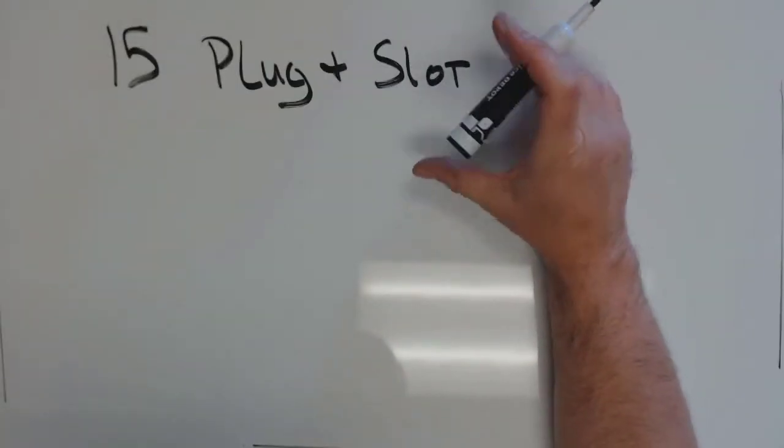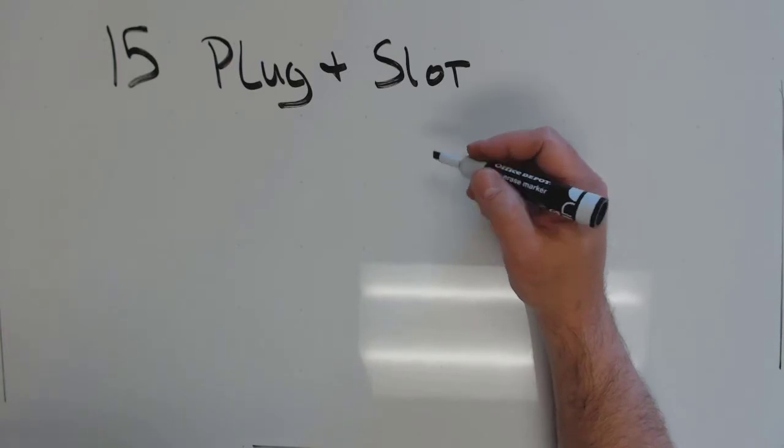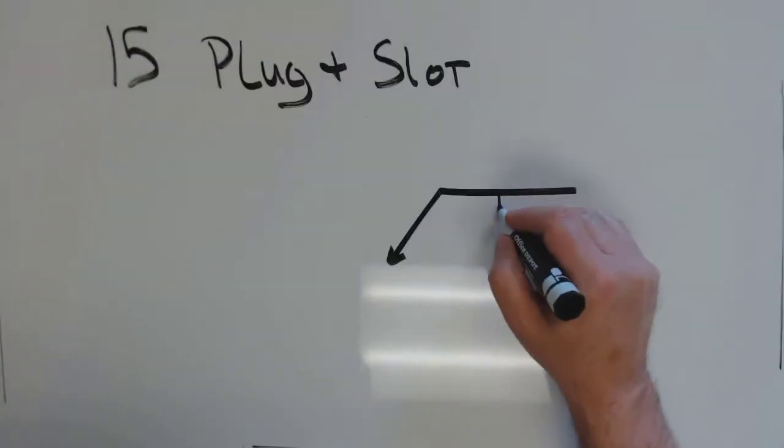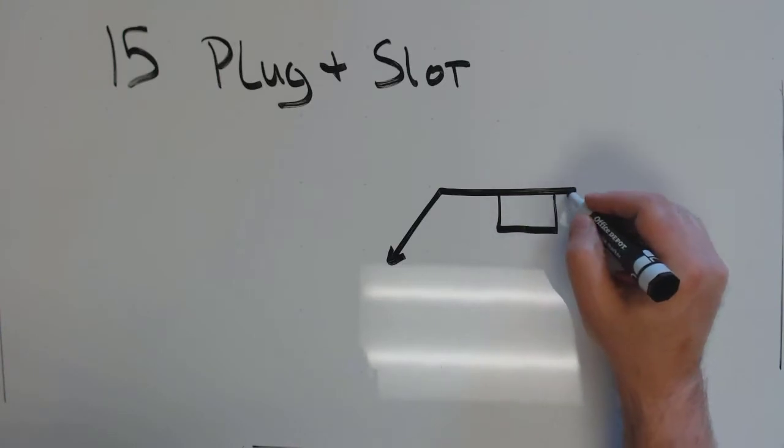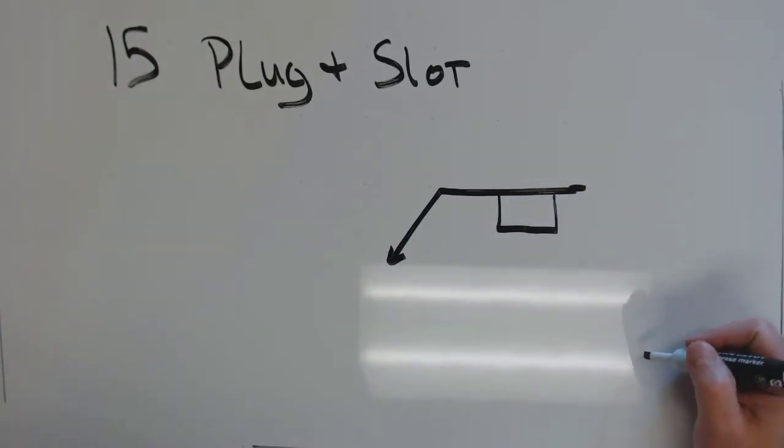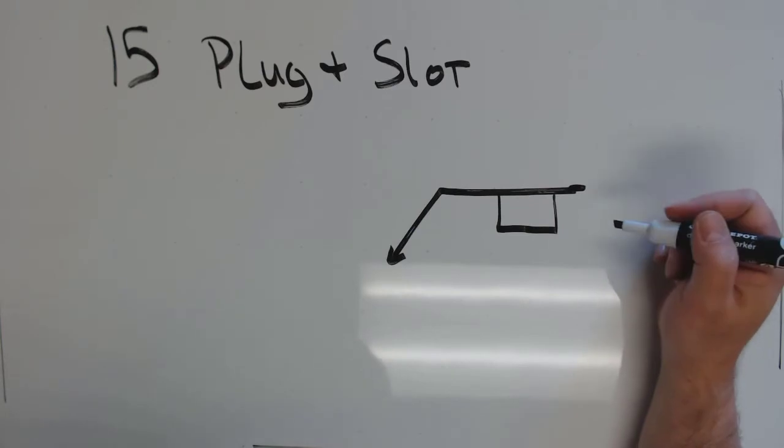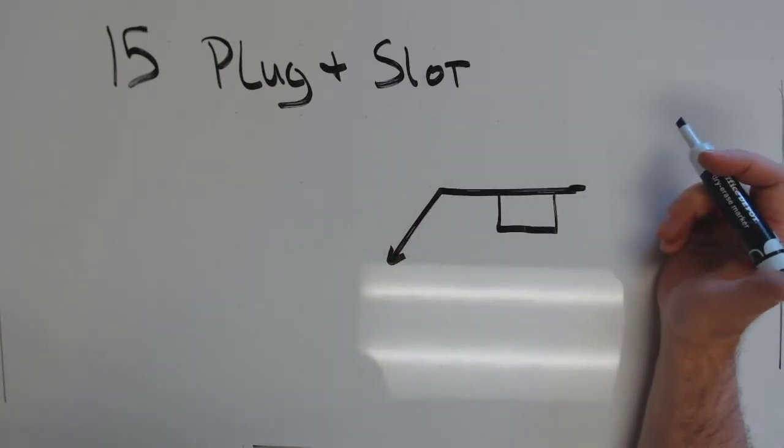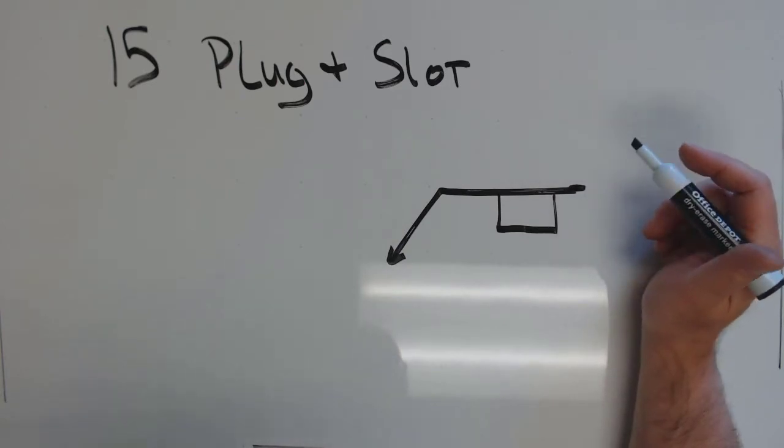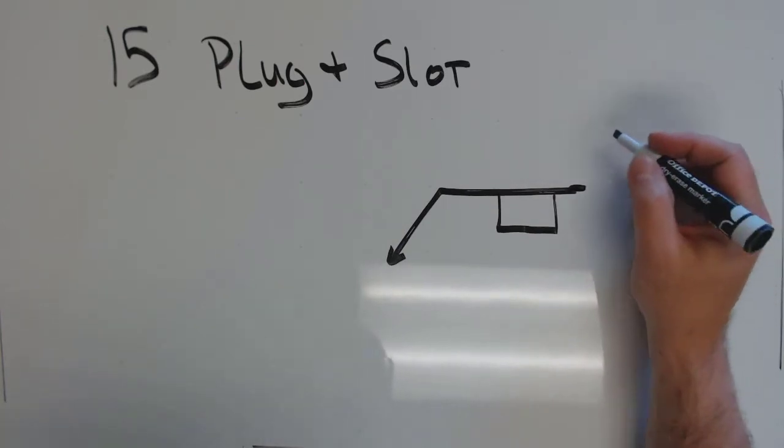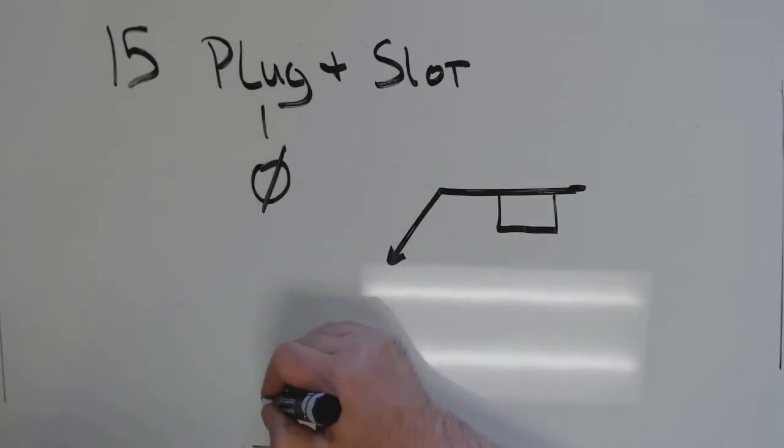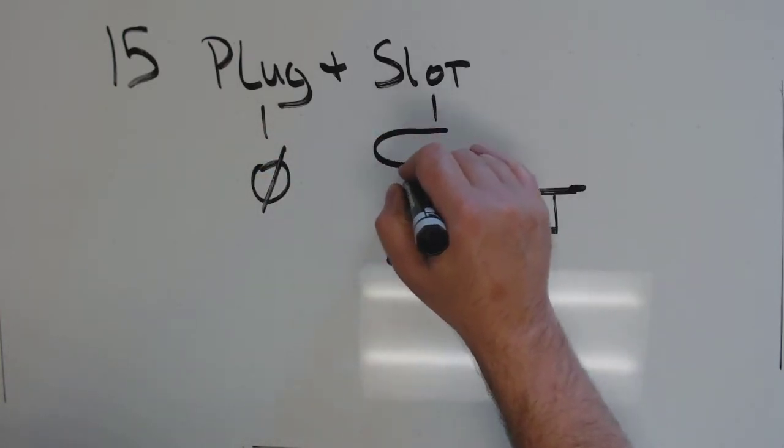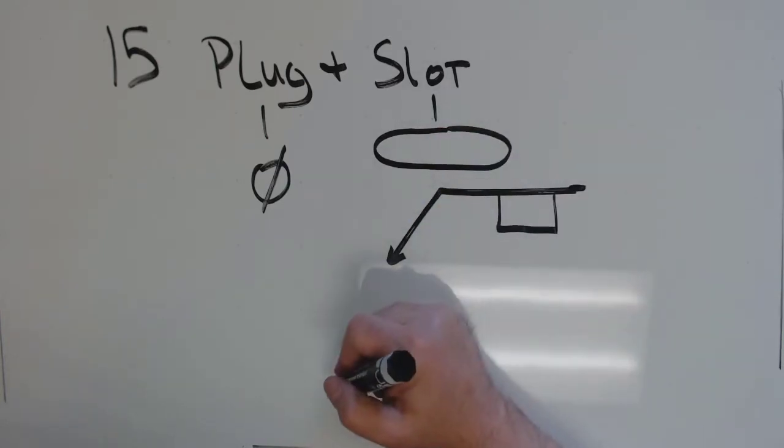So first off, plugs and slot welds. What's the weld symbol look like? The weld symbol for a plug weld is going to look just like that. The weld symbol for a slot weld is going to look just like that. So how do you know the difference between the two? It's really easy. Plug welds are a round hole. Slot welds are an elongated hole. That's the difference.